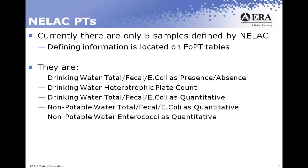For the heterotrophic plate count sample, the FOPT tables list two separate analytes for HPCs defined by technology. You'll see HPC (MF, PP) — membrane filtration or pour plate — and HPC (MPN) — most probable number techniques. They have split the HPC sample into two separate technologies, with a manufacturing range of 5 to 500 CFU/mL or MPN/mL.